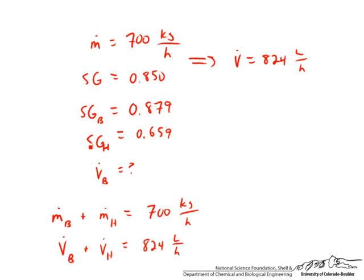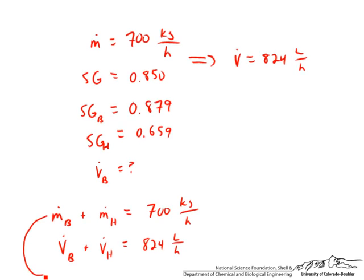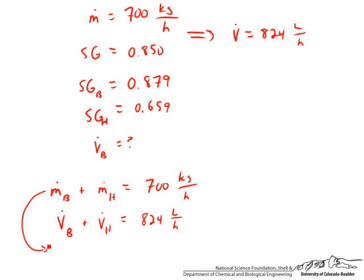We have the specific gravity for benzene and the specific gravity for hexane. We can use those to plug into this equation. That mass flow rate is equal to the density of benzene, which is 0.879 kilograms per liter, times the volumetric flow rate of benzene. That gives us the mass flow rate of benzene.